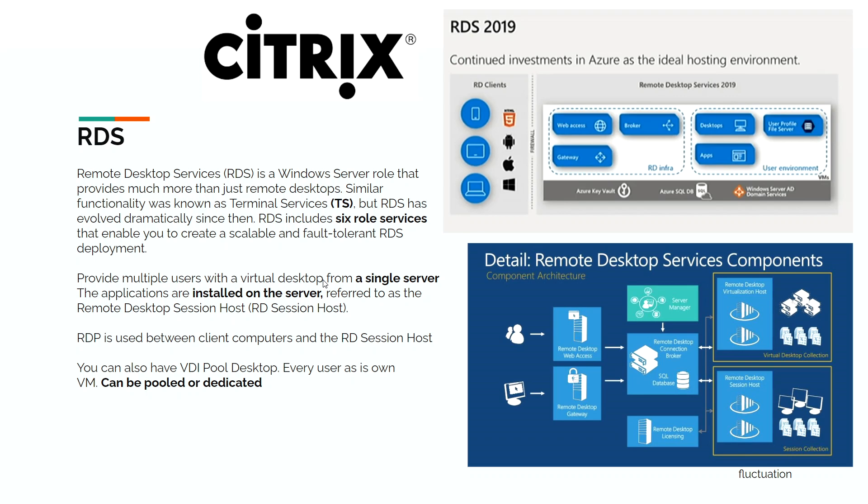If you have a very powerful server — for example, 180 GB RAM and a lot of CPU — you can install a lot of applications on that server. We're talking about accessing applications or the desktop of the server from a single server. These applications are installed on the server, referred to as the Remote Desktop Session Host, RD Session Host. Clients connect to the server using RDP, which is used between client computers and the RD Session Host.